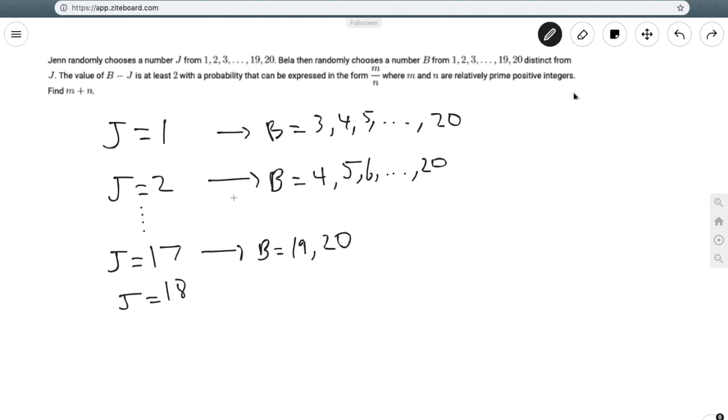With j equals 18, the only value that works is b equals 20. Notice that if Jen were to pick 19, then no number that Bella picks can work, because 20 is the highest number she can pick, and 20 minus 19 is not at least 2.